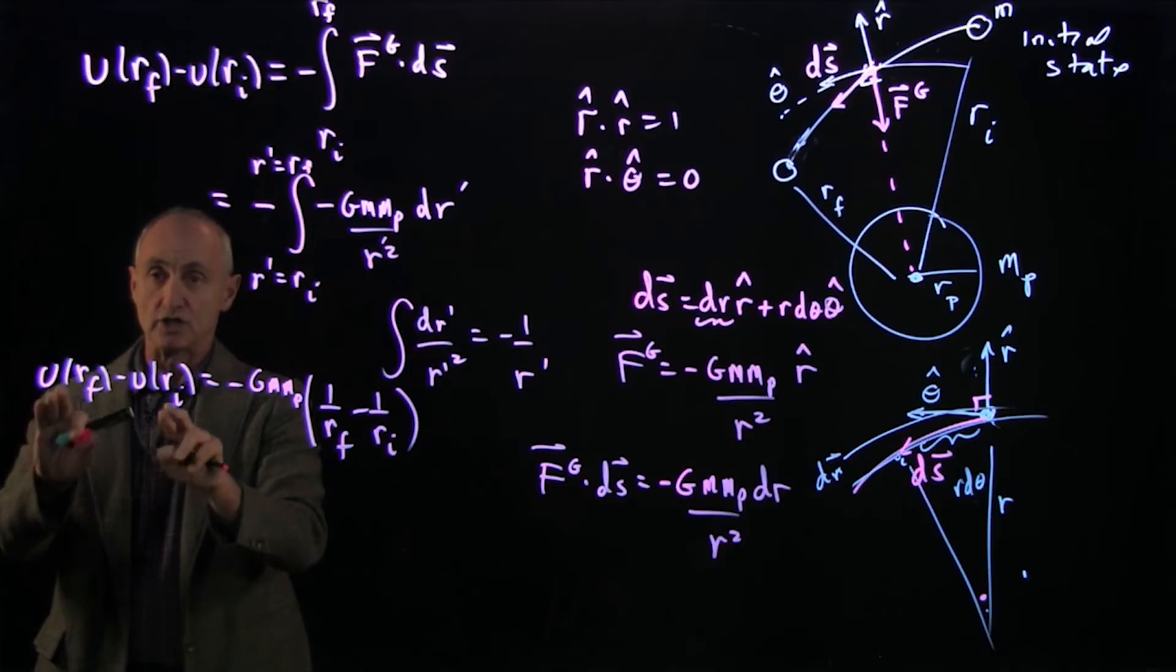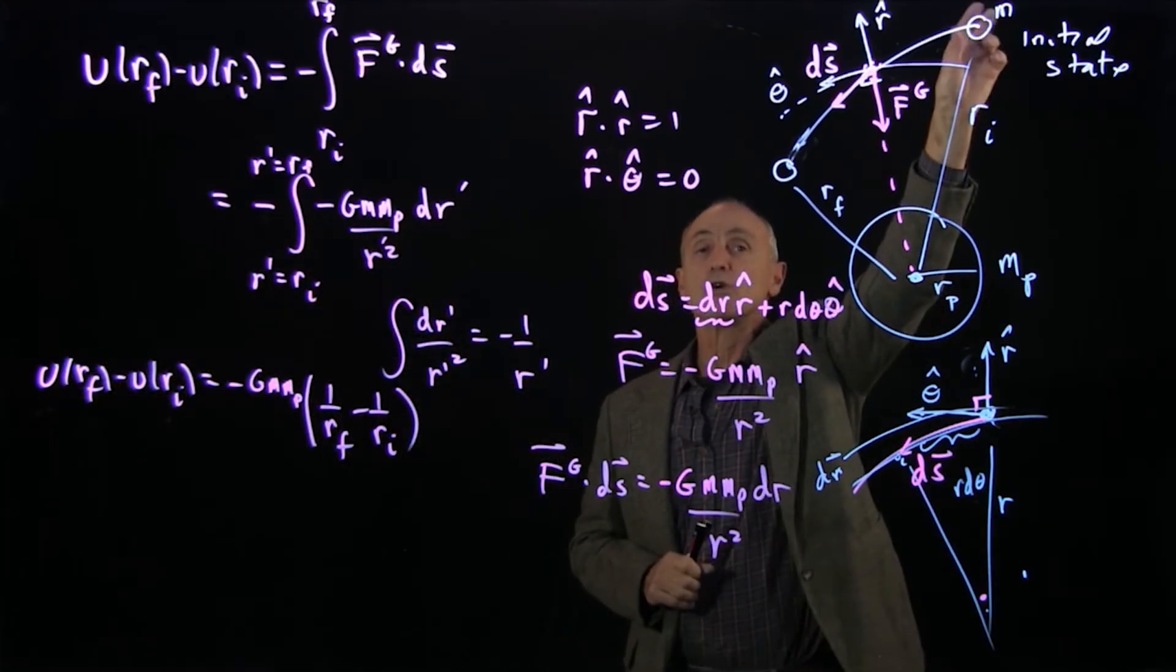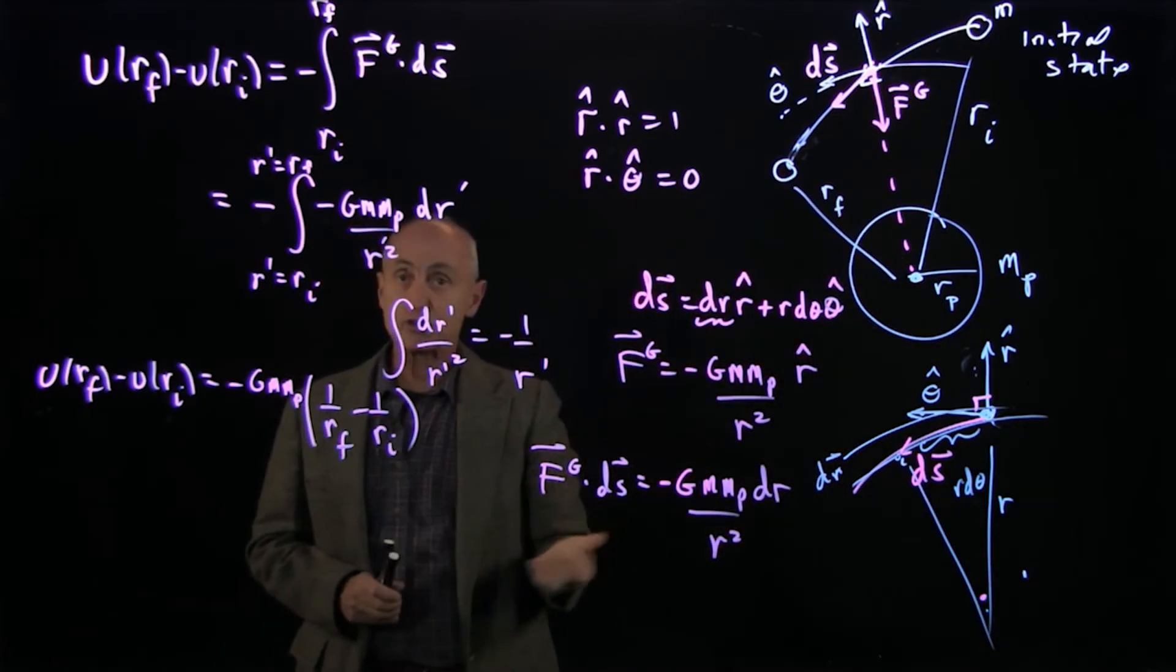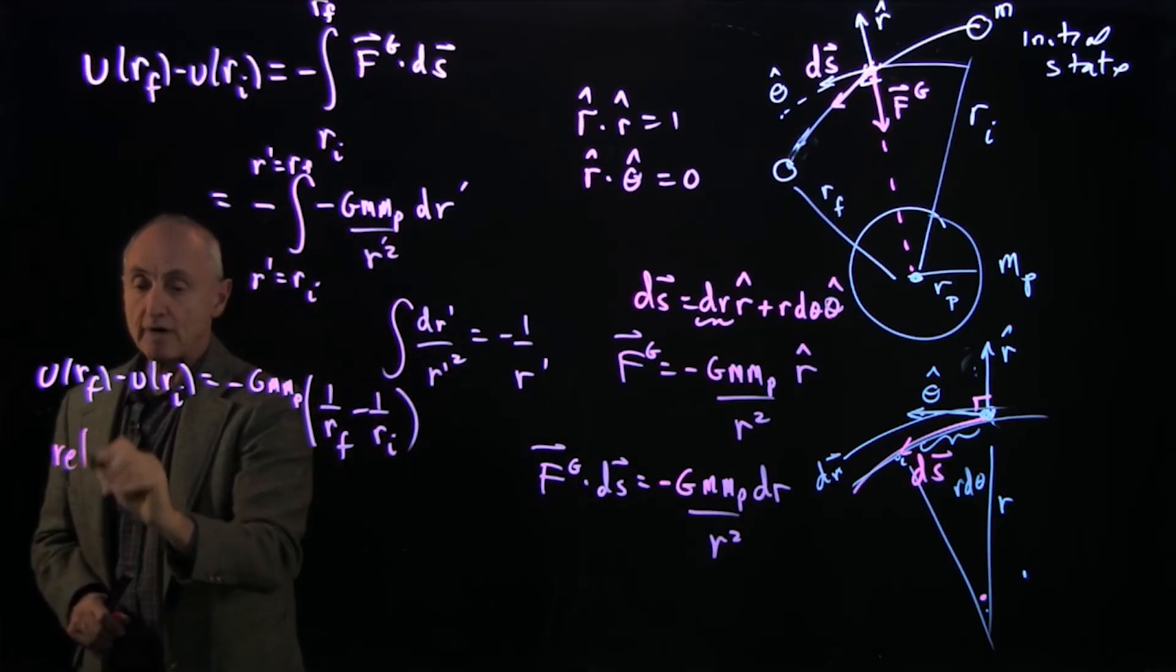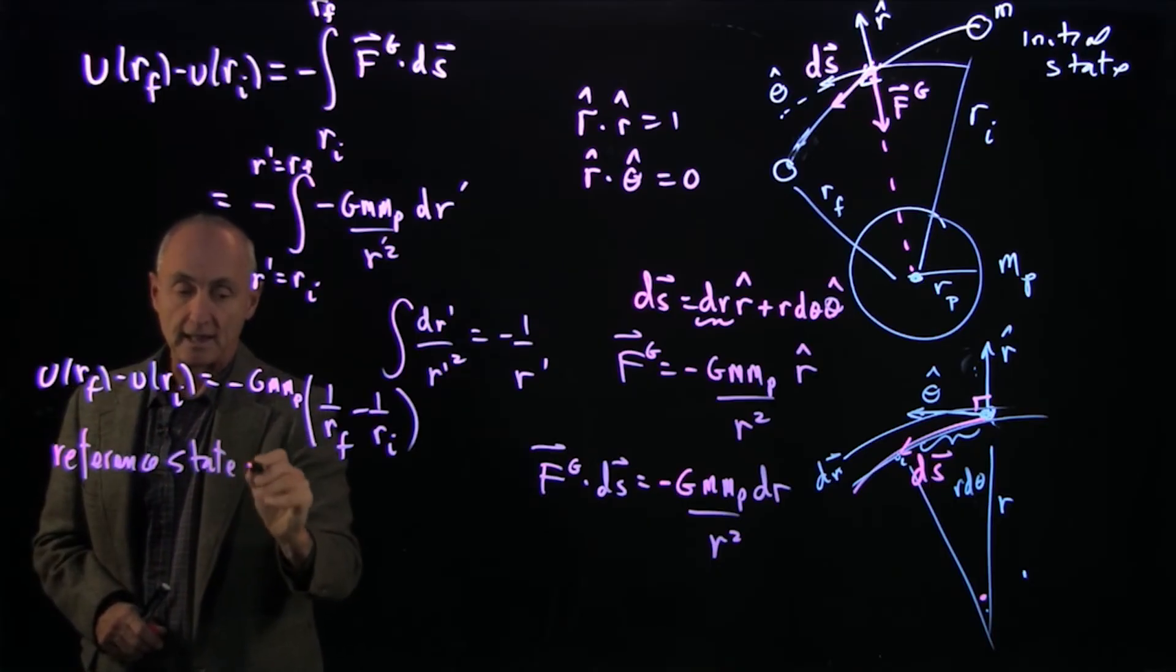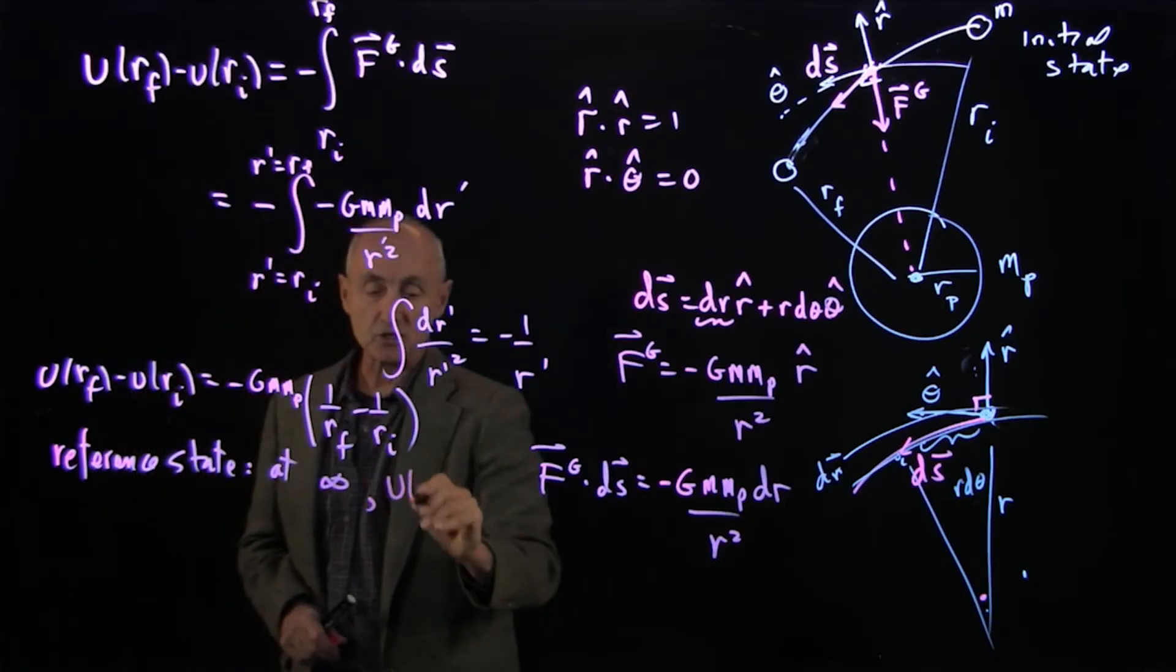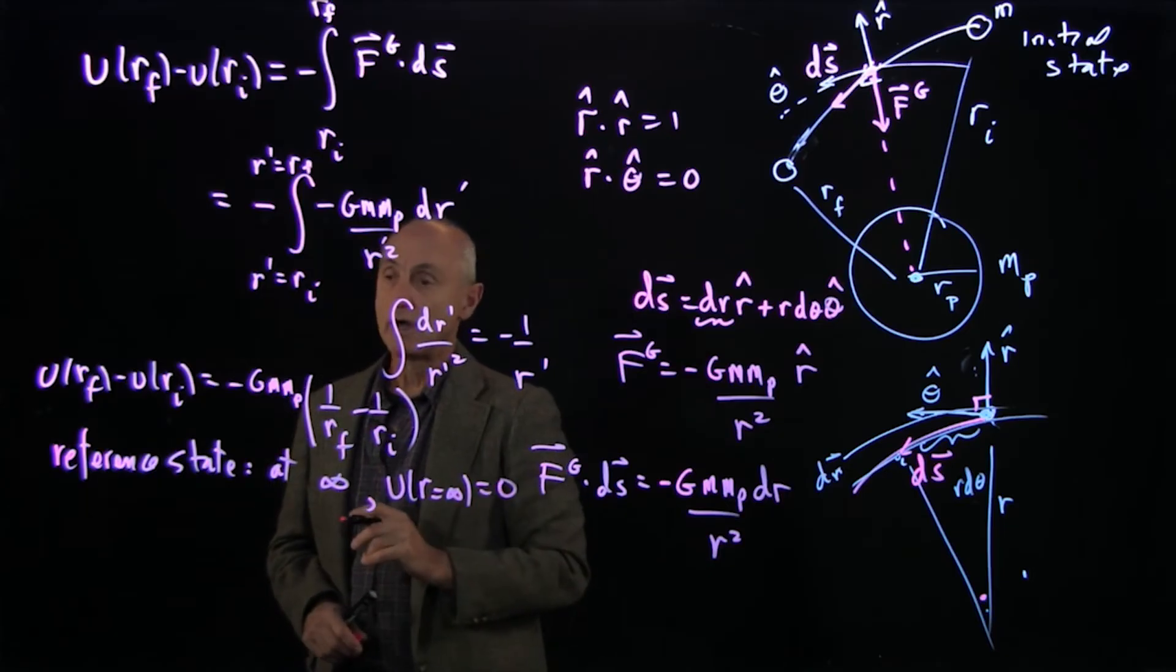So this is the change in gravitational potential energy, as my small object goes from some initial state to some final state. What about the potential function? And where should we choose our reference point? Now, our reference state here is a little bit unusual. And it will be at infinity. And we'll choose as a potential for our reference potential to be 0 at infinity.